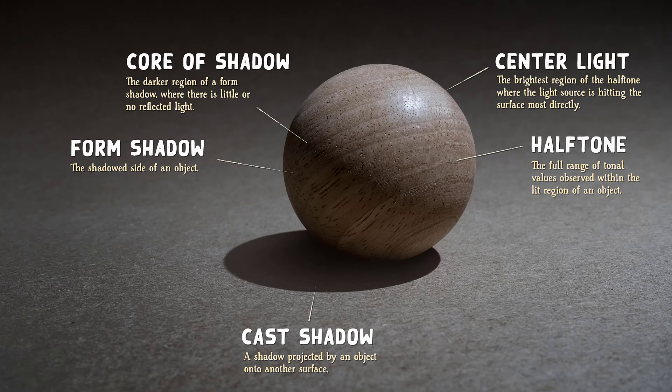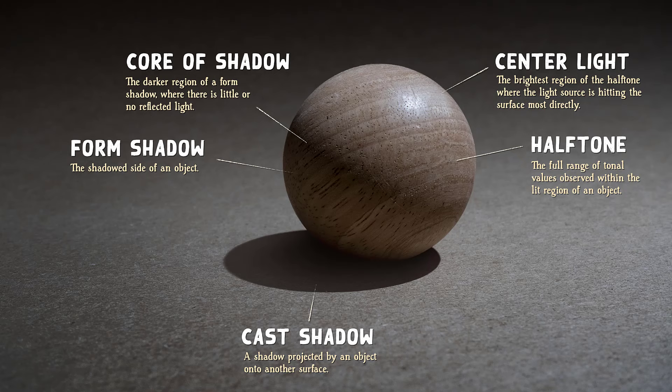We must be careful not to confuse this with specular highlights. Specular highlights are the mirror-like reflections of the light source. These reflections will sometimes be much brighter than the half tones of an object, or sometimes barely distinguishable at all. They tend to appear very sharp on smooth surfaces, but may be much softer on rough surfaces.